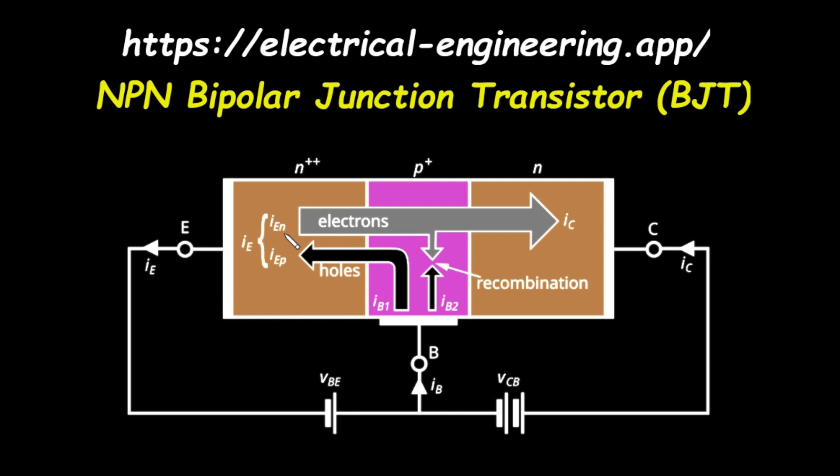Now, let's follow the huge number of electrons that have just been injected into the thin P-type base. These electrons are now minority carriers in a region filled with majority carrier holes. They have two possible fates. The first, and by far the most common fate, is that they travel straight across the very thin base region without running into a hole. Because the base is so narrow, most electrons can diffuse across it very quickly.